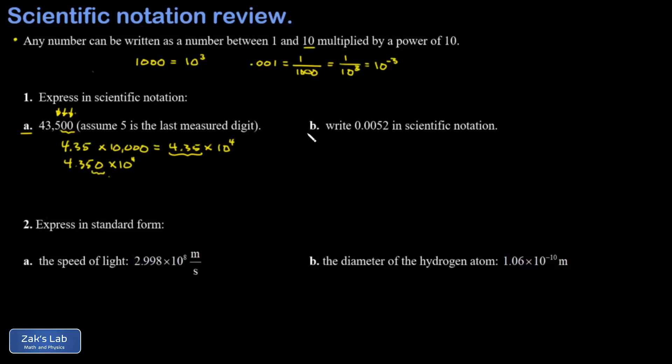Let's take a look at part b. This time we have a small number, 0.0052. I could write that as 5.2 times 0.001, or one thousandth. And then I remember one thousandth is 10 to the negative three, and we're done with that one.